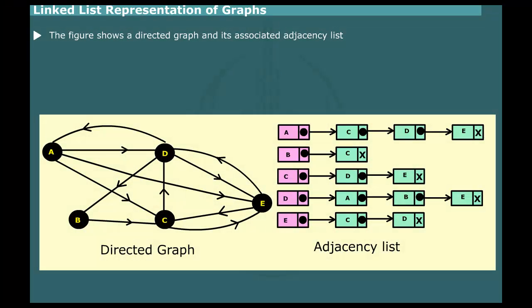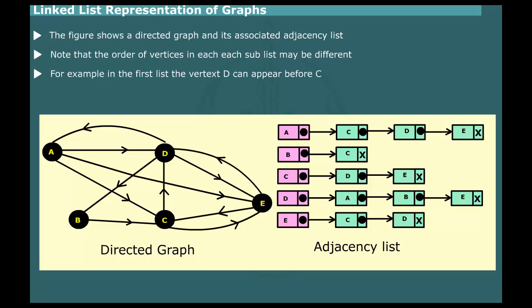Consider, for example, the graph shown in figure. A cross in the link part of a node represents a terminal node of a list. The order of edges in a list can be different. For example, in the first Link List vertex, D can also precede vertex C.